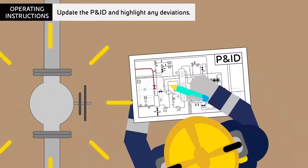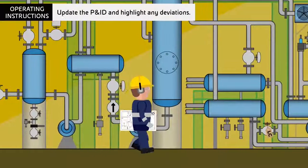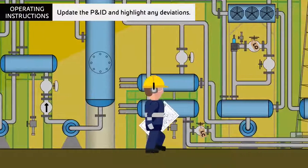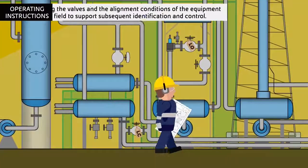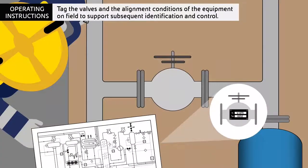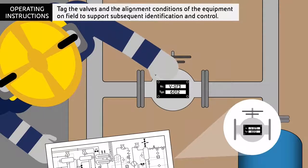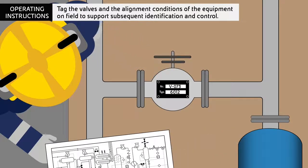Update the P&ID and highlight any deviations. Tag the valves and the alignment conditions of the equipment on field to support subsequent identification and control.